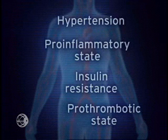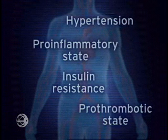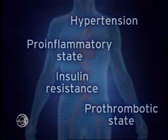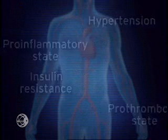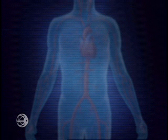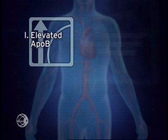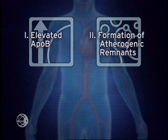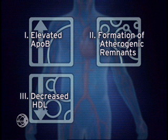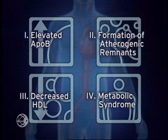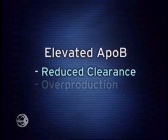Now, let's take a look at the origins of dyslipoproteinemias associated with premature cardiovascular disease. These origins may be divided into four categories: elevated ApoB, formation of atherogenic remnants, decreased HDL, and the metabolic syndrome. One cause of atherosclerosis is reduced clearance of ApoB particles, primarily in the liver.